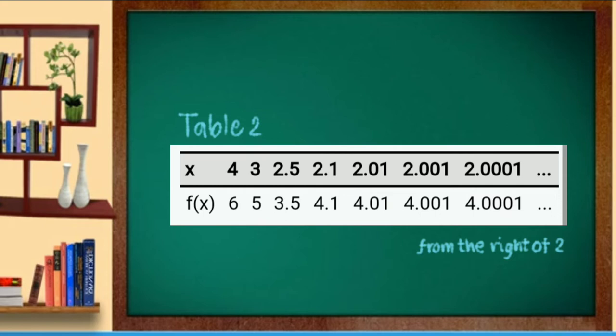Now, let's try approaching 2 from the opposite side. The f of x is clearly heading for 4 as well.